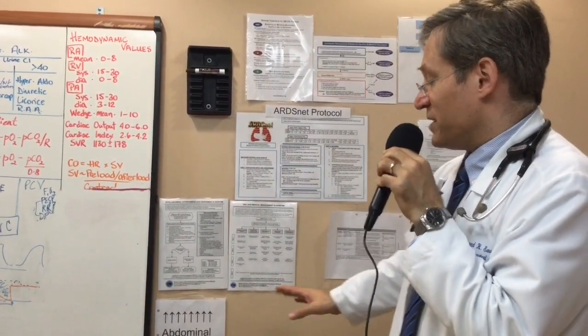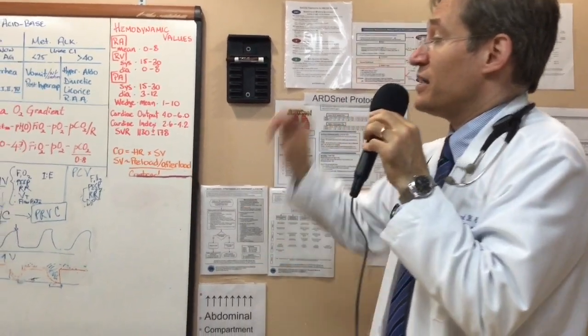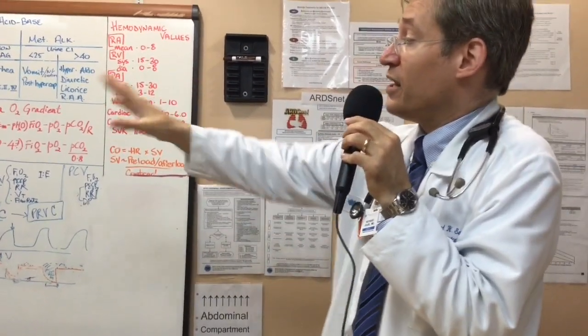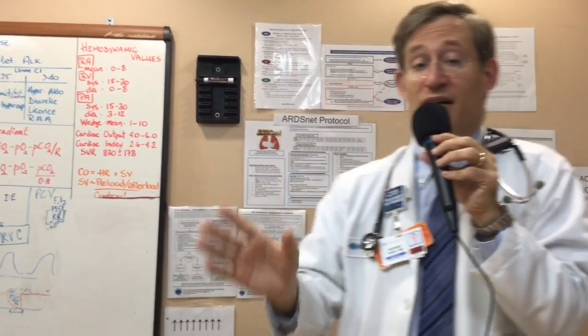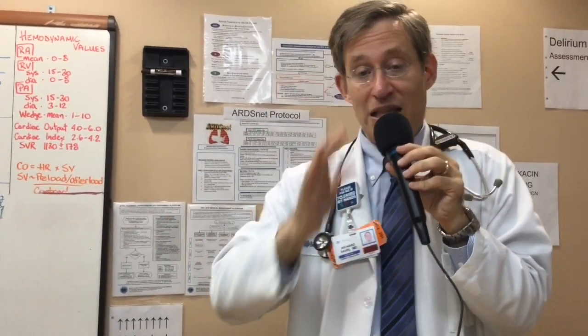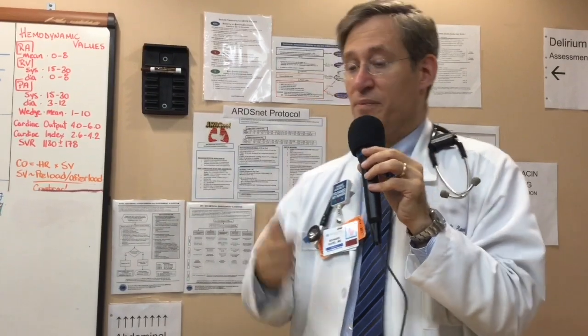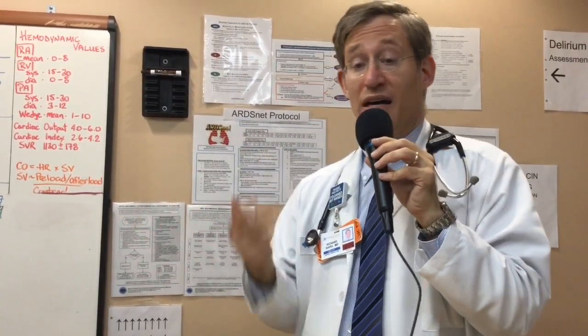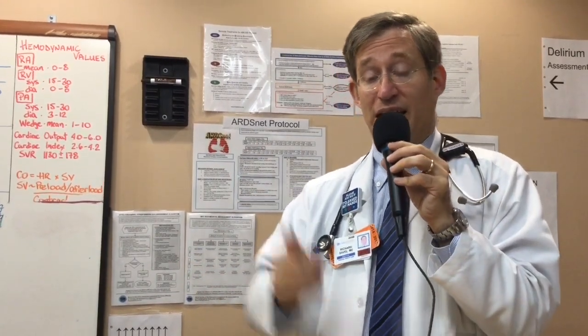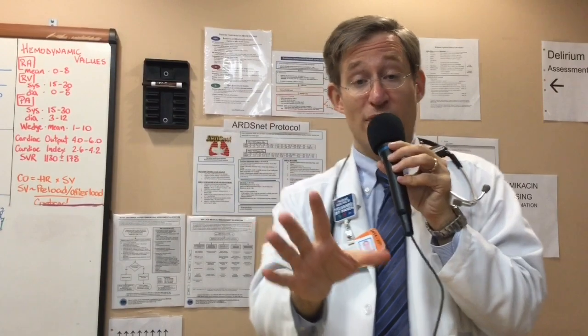Abdominal compartment syndrome is a crucial cause of non-cardiogenic obstructive shock, and by the time it's clearly shock, it's often too late. What you need to remember is that a patient with oliguria, some degree of hypotension, high peak airway pressures, and high central venous filling pressures — check a bladder pressure. If it's greater than 20 with any evidence of organ dysfunction, you have abdominal compartment syndrome.